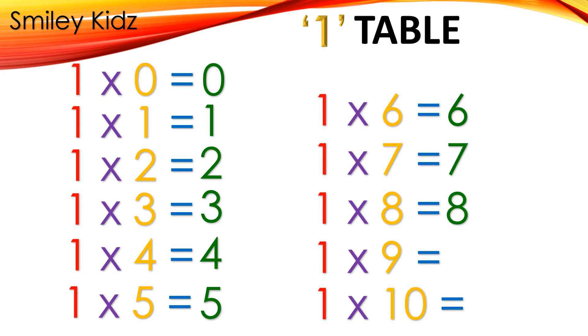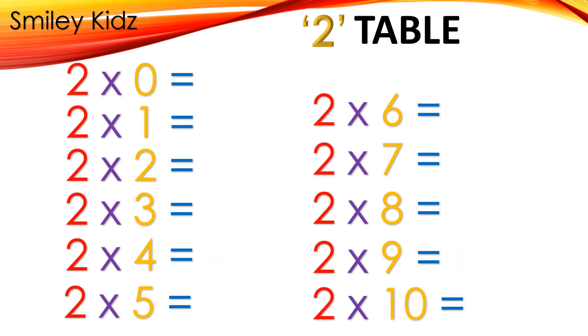1×9=9, 1×10=10. Table 2: 2×0=0, 2×1=2, 2×2=4.